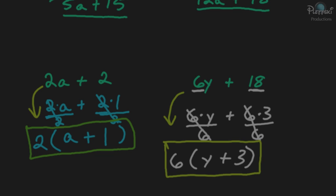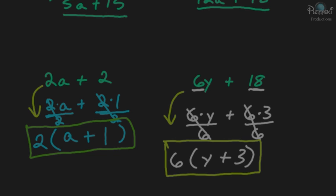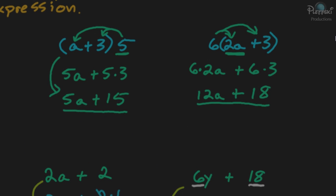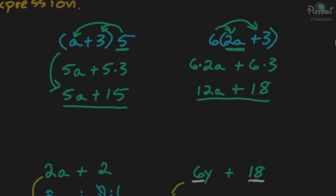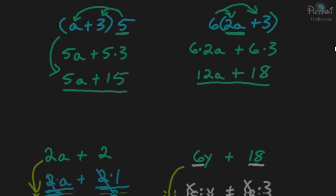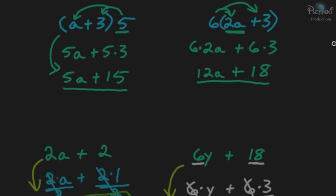So that's the opposite — factoring is the opposite of the distributive property. You should have a good understanding of this, and in the next video we'll take it a step further and do some examples that are just a little bit more complicated.